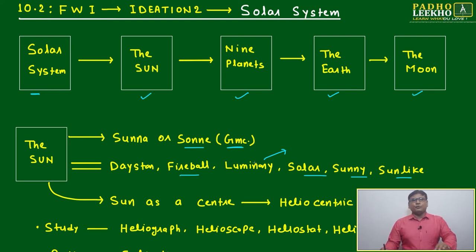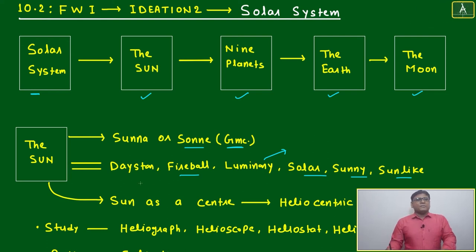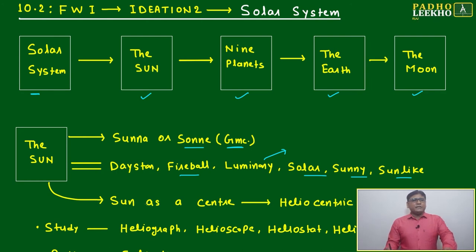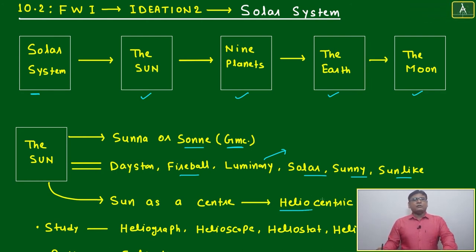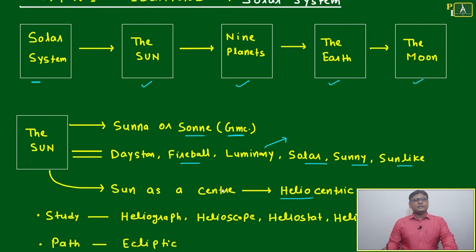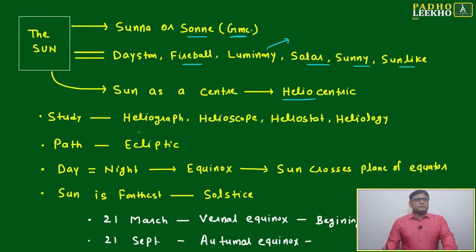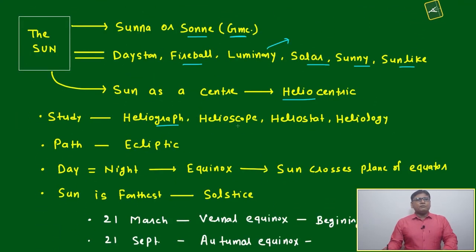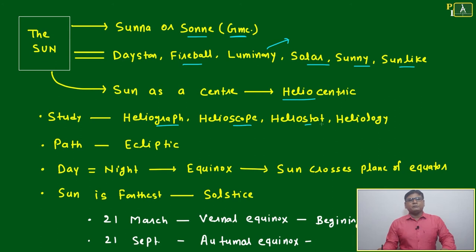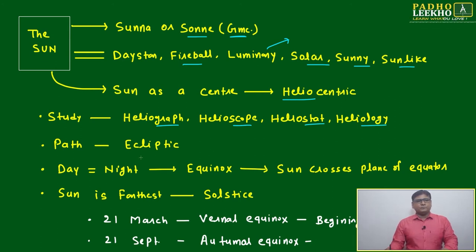Going further: day star, fireball, luminary, and the sun as center — due to this it is called heliocentric. Study related to the sun includes: heliograph, helioscope (an instrument we use), heliostat, heliology, and ecliptic — the path of the sun.